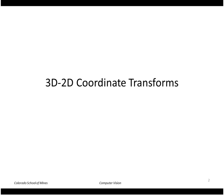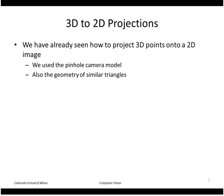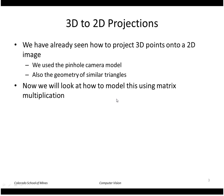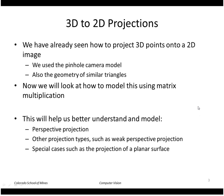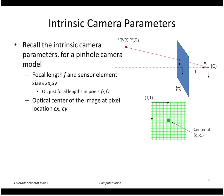This lecture is about three-dimensional to two-dimensional projections. We've already seen how to project 3D points onto a 2D image using a simple pinhole camera model, trigonometry, and similar triangles. Now we'll look at how to model this using matrix multiplications, which will help us understand perspective projection, other projection types such as weak perspective projection, and special cases such as the projection of a planar surface.